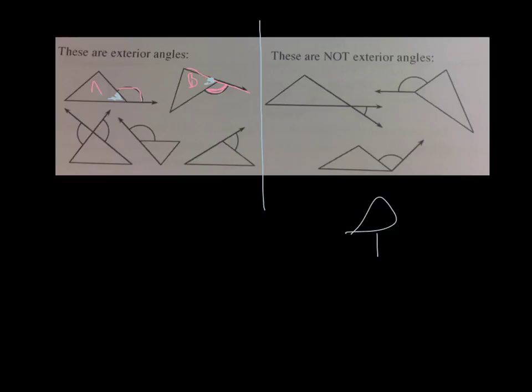Whereas if you look over at the right side, where these are examples that are not considered exterior angles, first you'll see in this one, we never extended the side of the triangle in a straight line, right? It would have to either go this way or this way, so that's why this one doesn't work.